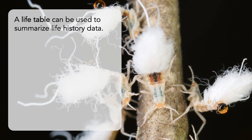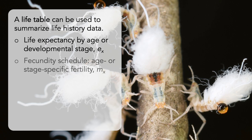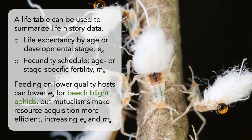A life table can be used to summarize the basic life history of a population or species. For each age group, a life table tallies the number of individuals and their per capita reproduction. Using this information, we can determine life expectancy, E sub X, while also tracking the fecundity schedule, M sub X. These life table parameters can change over time, but not all changes are evolutionary changes. Co-evolutionary interactions can certainly have an effect, like how feeding on lower-quality hosts can lower life expectancy for beach blight aphids, but mutualisms with ants can help make resource acquisition more efficient, increasing both life expectancy and age-specific fertility.